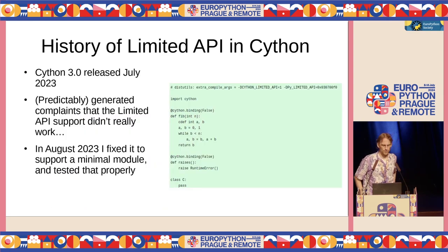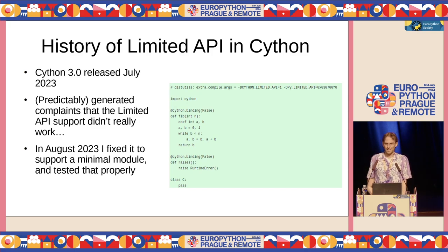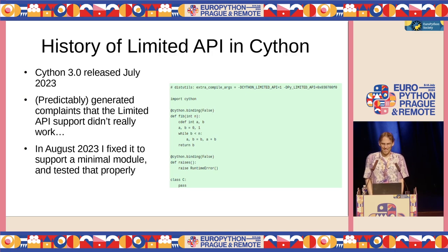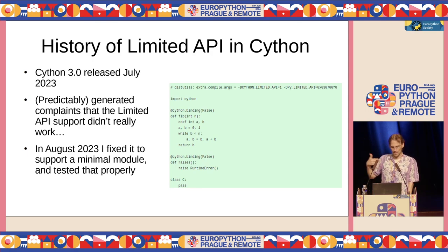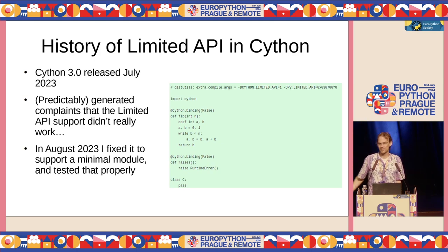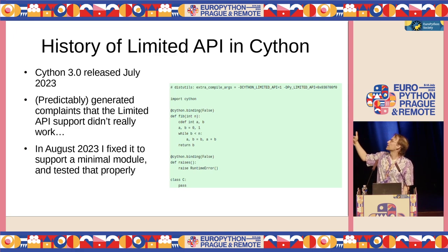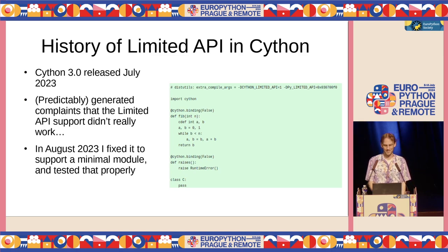That preparatory work basically made it into the Cython 3.0 release, which we released in July last year. Predictably, people tried to use the limited API work and found it didn't work and complained about it — which we kind of knew. In August that year, I did a bit more work: I fixed it so there was one minimal module that worked. You could compile one thing — this Fibonacci program — in the limited API. Nothing else, but this one thing. I added a test which is now part of our test suite and enforces that it does actually work.